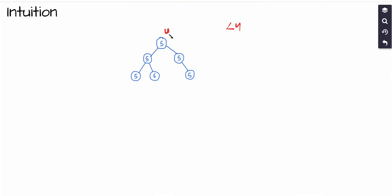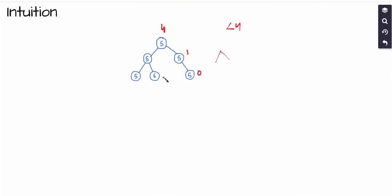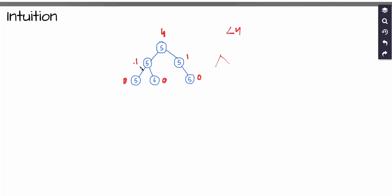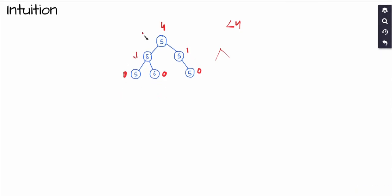For the root node, the answer is 4. For the child node below it, the answer is 1 because that is the only path when we can only move left or right — we cannot move to the parent. For the leaf nodes, the answer is 0 because they have no children. For another node, the answer is 1 because there is one valid path. Out of all these nodes, the root node has the largest value, which is 4.